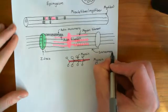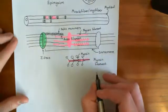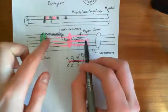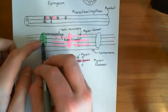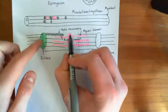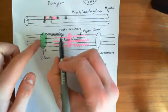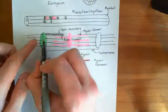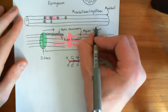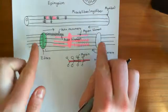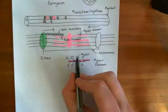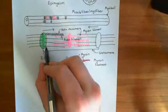What will happen when we stimulate this muscle to contract is that this myosin filament will pull this Z-disc towards the central disc attaching all the myosin filaments. It will pull this Z-disc in one direction, and it will pull the other Z-disc in the opposite direction, moving the two Z-discs closer together. It will do that by the myosin heads climbing up these actin filaments.